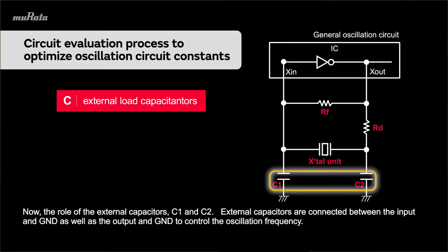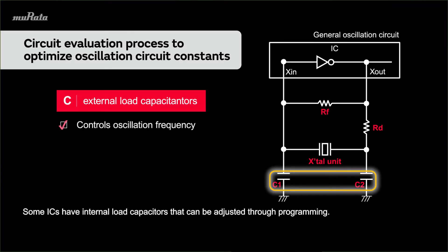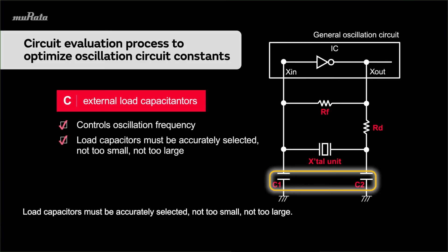Now, the role of the external capacitors C1 and C2. External capacitors are connected between the input and ground as well as the output and ground to control the oscillation frequency. Some ICs have internal load capacitors that can be adjusted through programming. Load capacitors must be accurately selected — not too small, not too large.